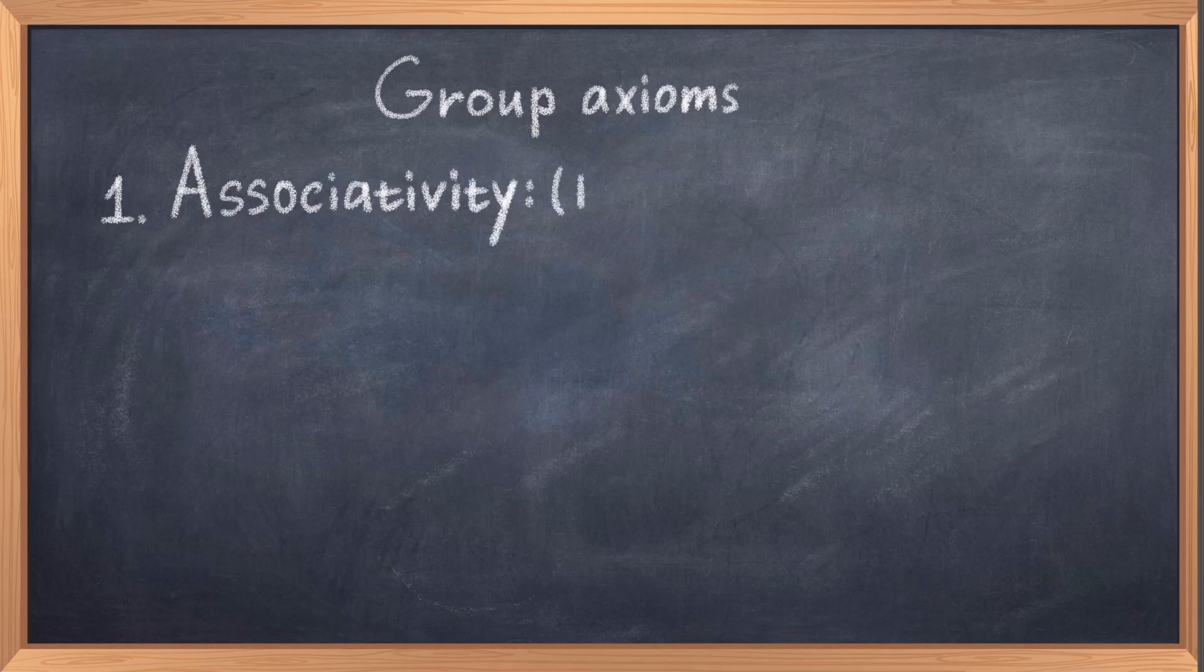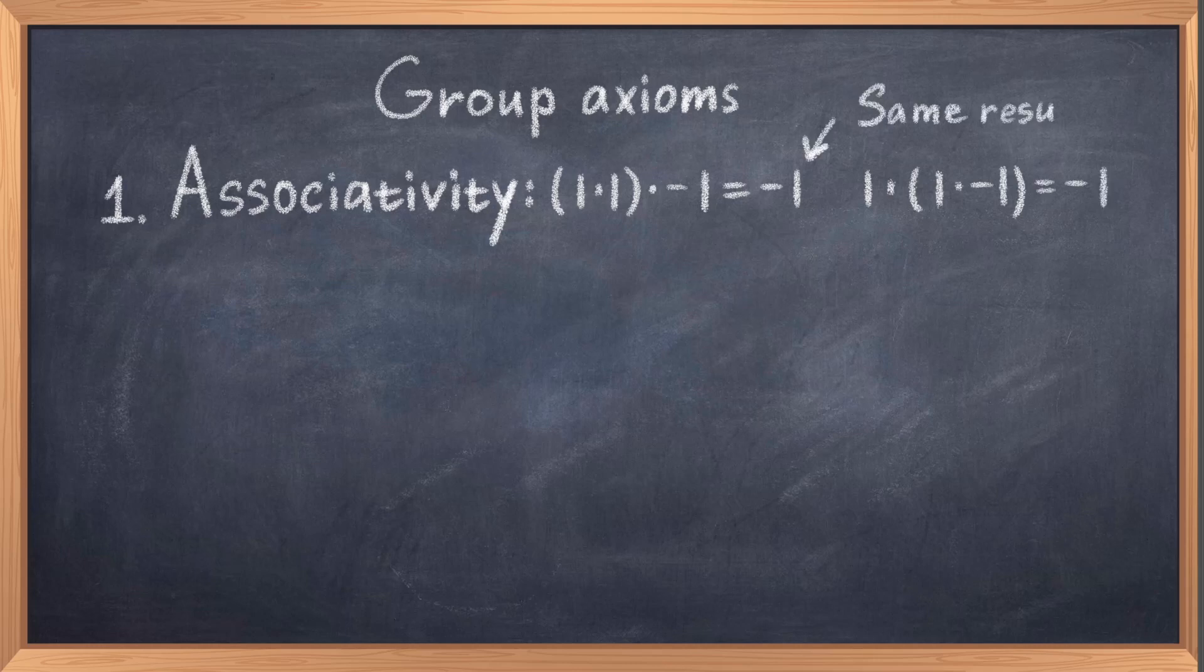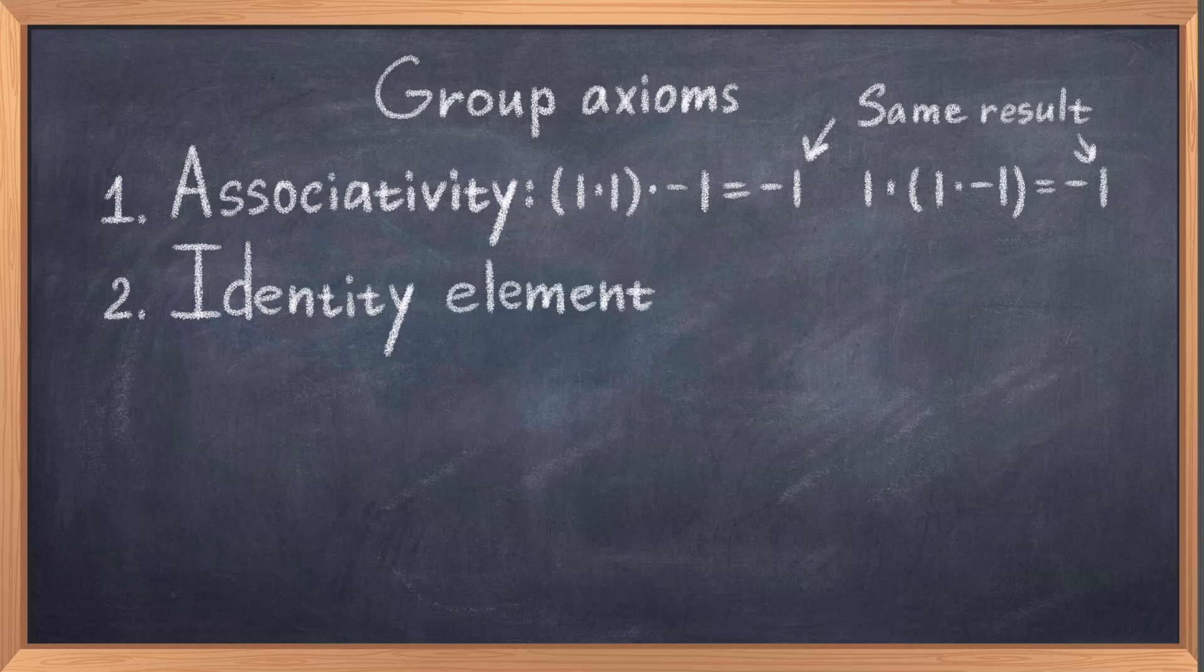Formally, there are three axioms for a group. The first is called associativity. In relation to the Z2 group, this means that if you want to multiply three numbers, like 1 times 1 times minus 1, then if we multiply first 1 times 1, which is 1, and then we multiply 1 with minus 1 to get minus 1, this result should be the same if we multiply the two last numbers first. Thus we see that we get the same result no matter where we start multiplying the numbers together. That is the first requirement.